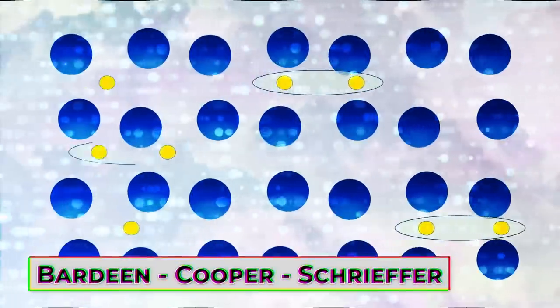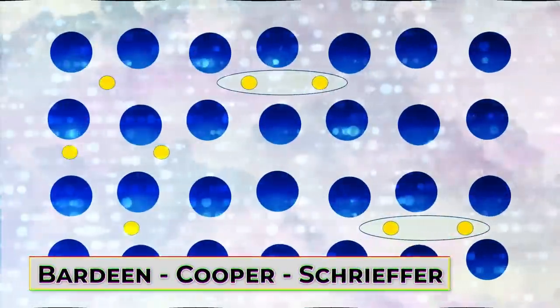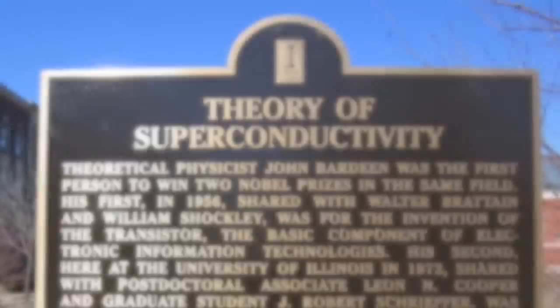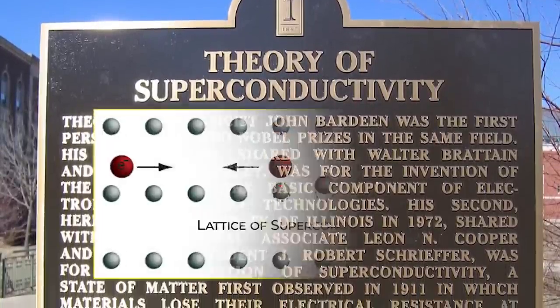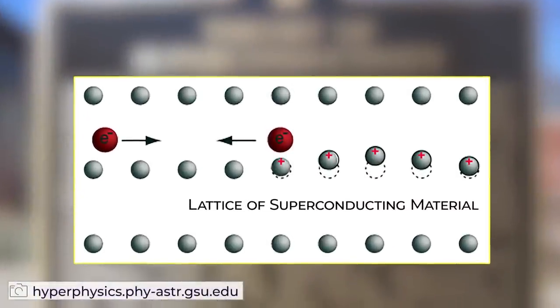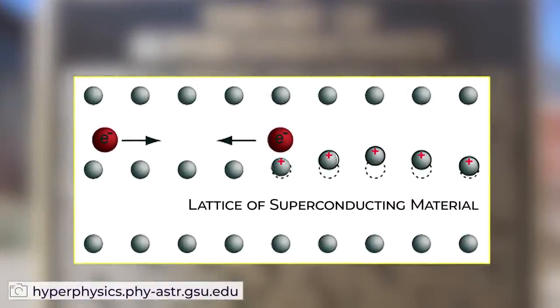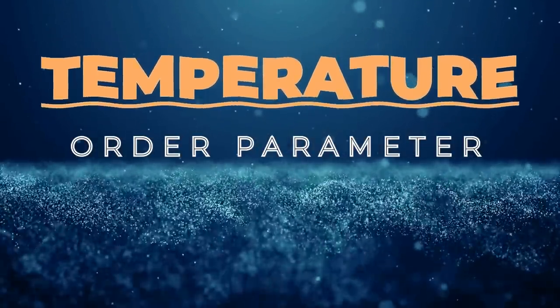The BCS or Bardeen-Cooper-Schrieffer superconductivity doesn't apply to all types of superconductors. There are so-called unconventional superconductors that don't follow BCS, so there's more to the story than we have time for today. Let's leave it at the understanding of the formation of a condensate of electrons marking a phase change from non-superconductor to superconductor. The phase is characterized by an order parameter, and that order parameter is controlled by the temperature of the system.